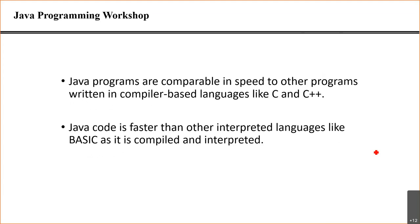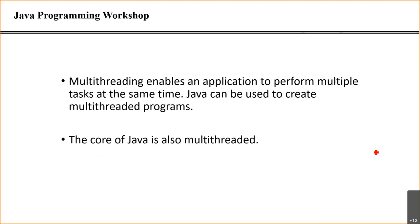That's why they say Java code is portable — it can be taken from one machine to another and executed on any machine. Its speed is comparable to compiler-based languages like C and C++ because it is also compiled. In Java, you can also do multi-threading, which makes multi-user and multitasking possible.